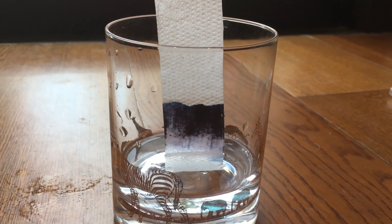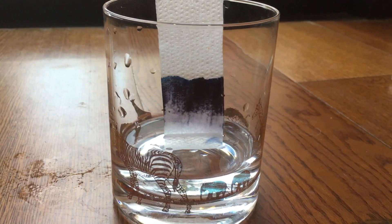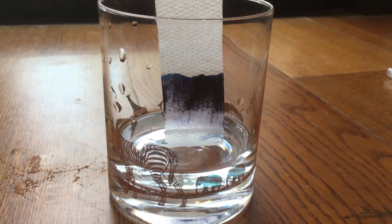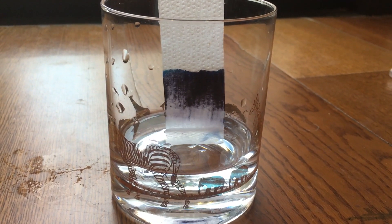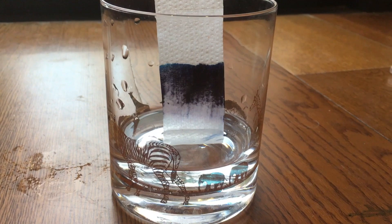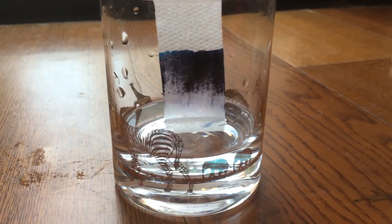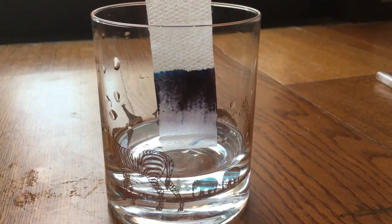We dip the tissue paper in water as chromatography works by passing a liquid, in our experiment water, through a filter material like tissue paper. The professional way of chromatography is through chromatography paper instead of tissue paper.